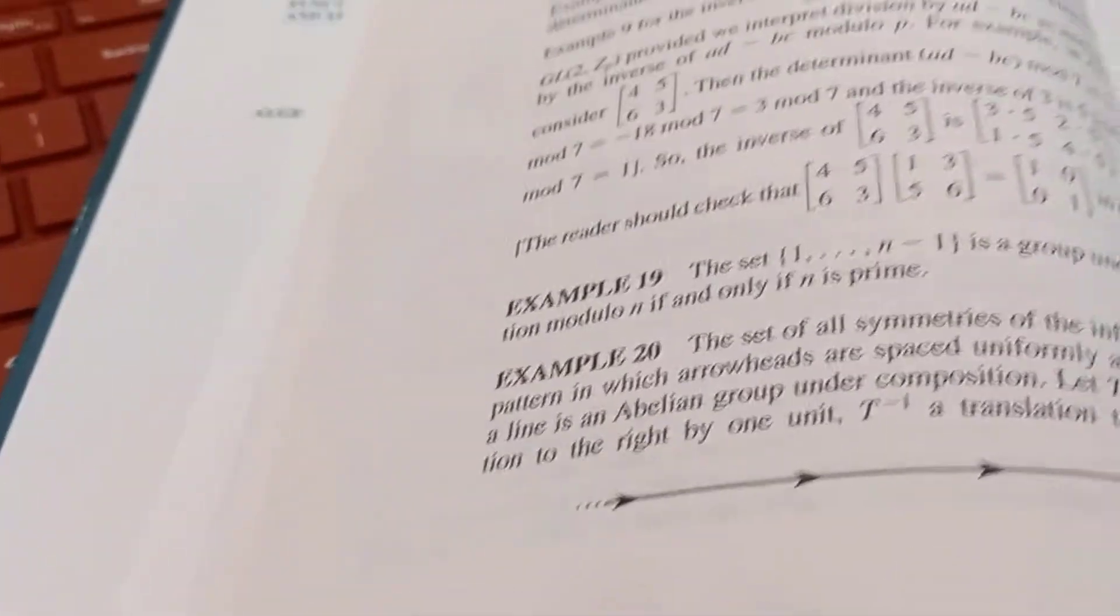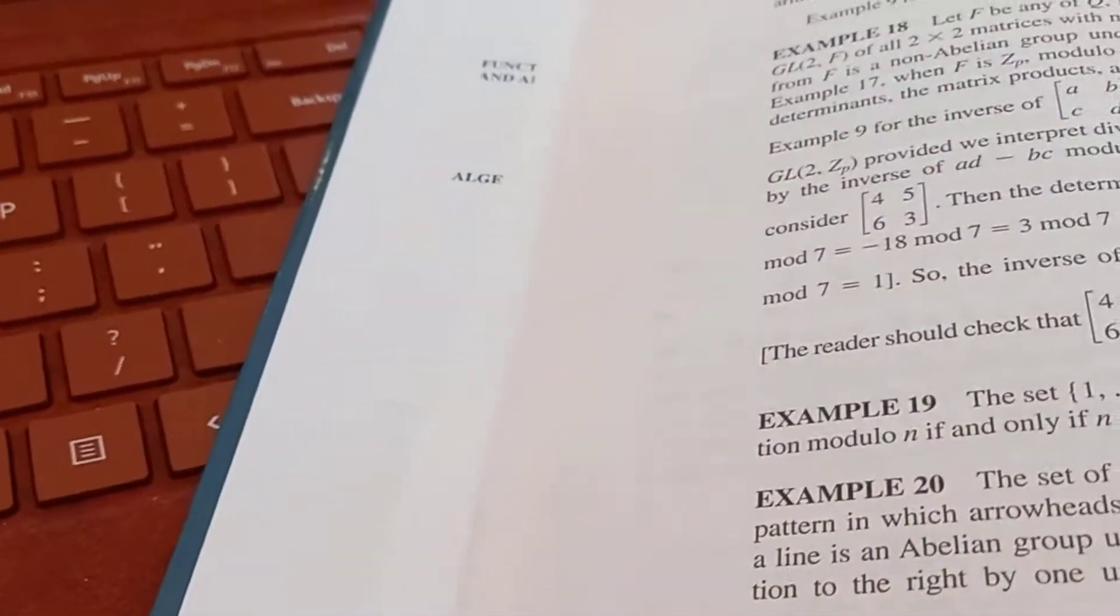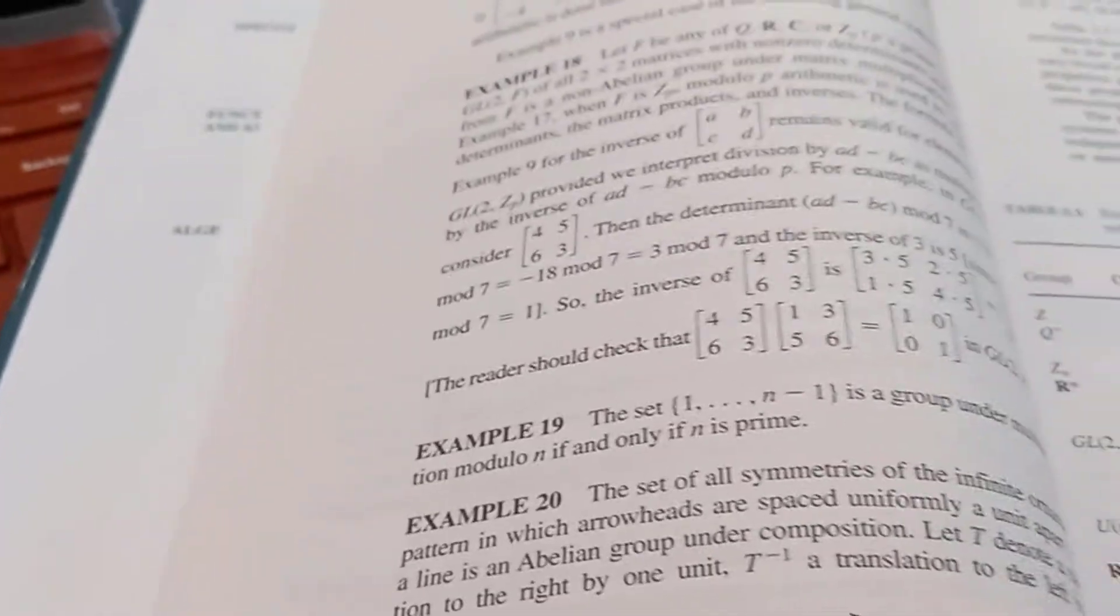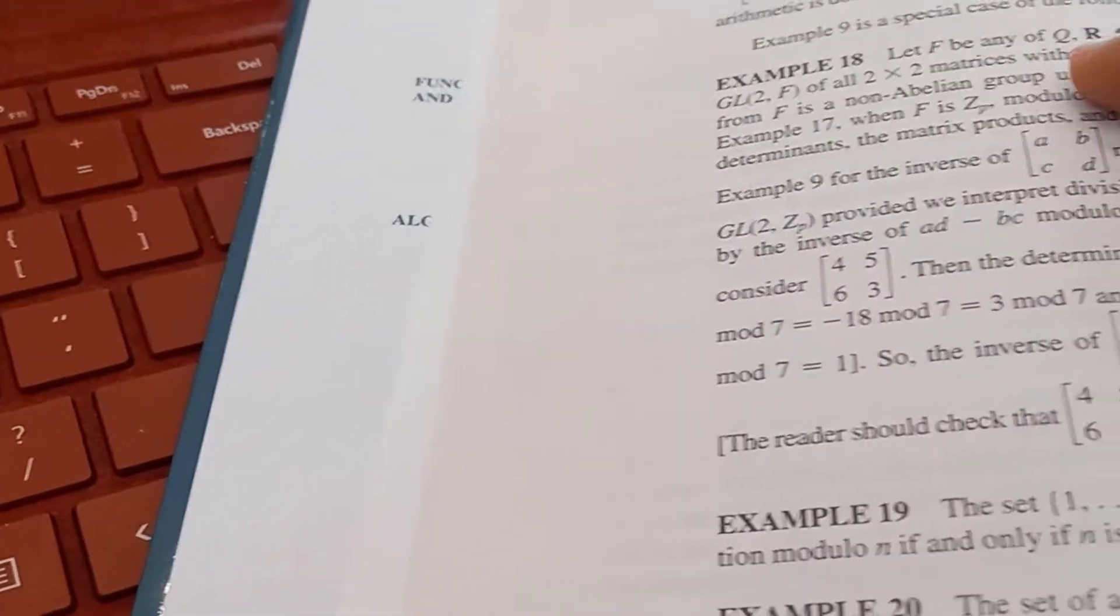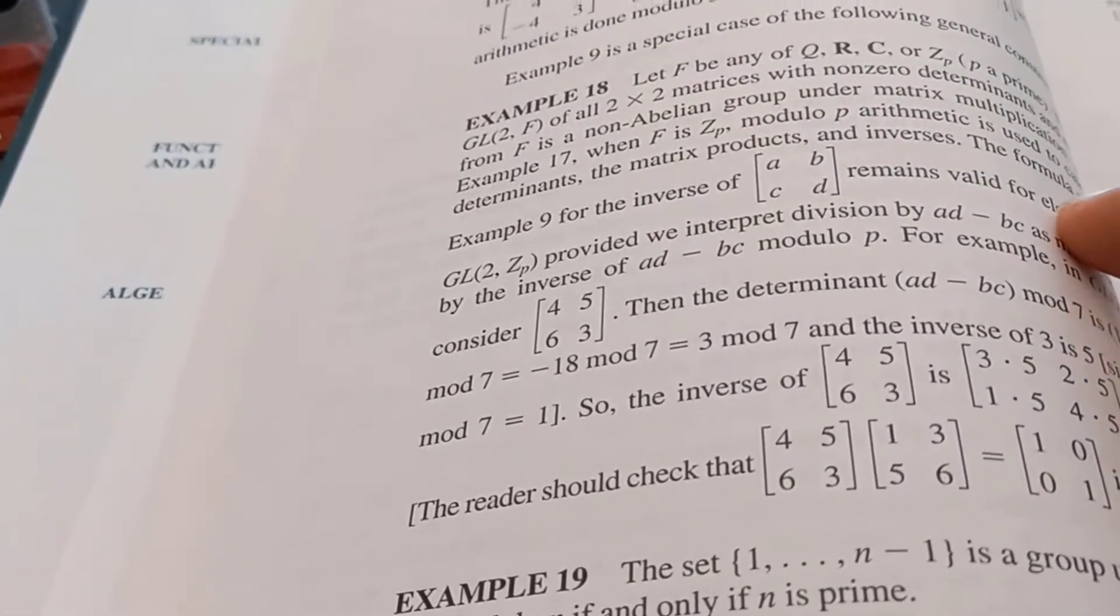Actually, we have many more than that. 20 so far. So 20 examples. If you've done that 20 times, just whenever you encounter an example, write down whether or not it's abelian and why.